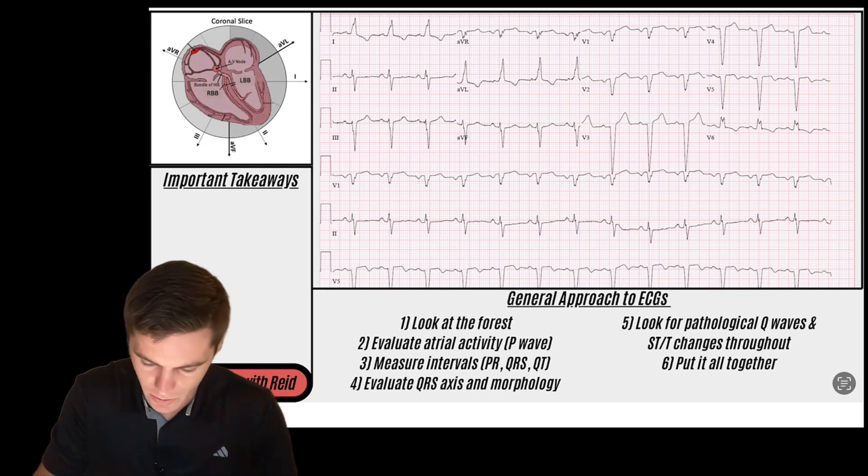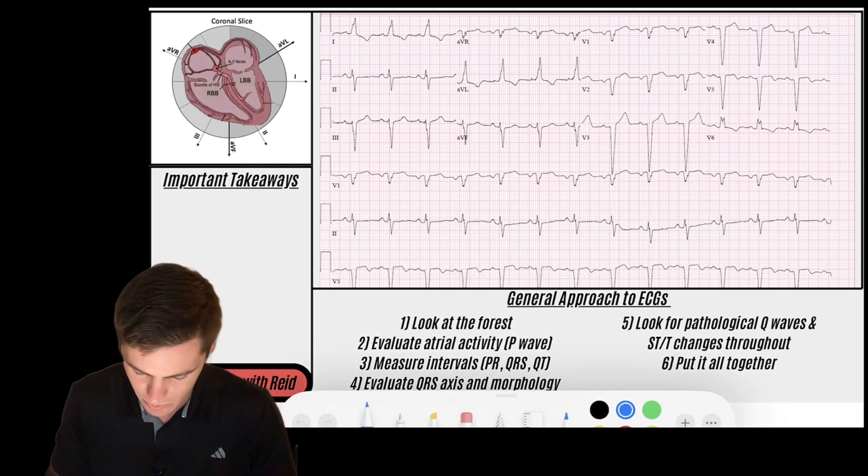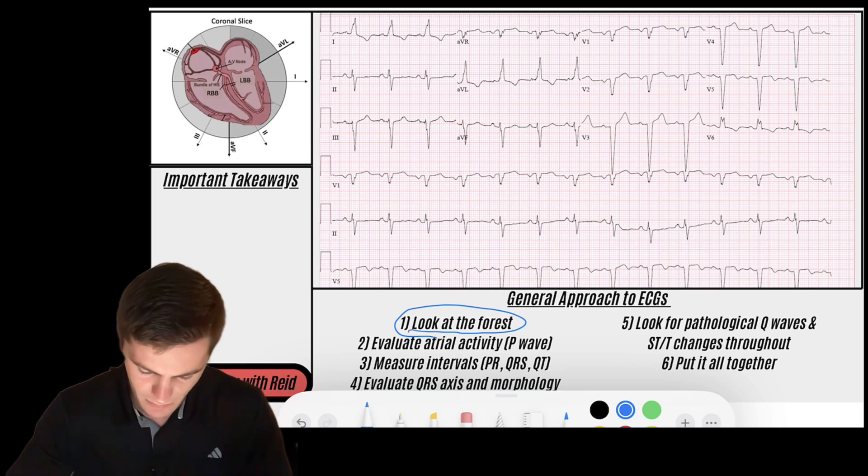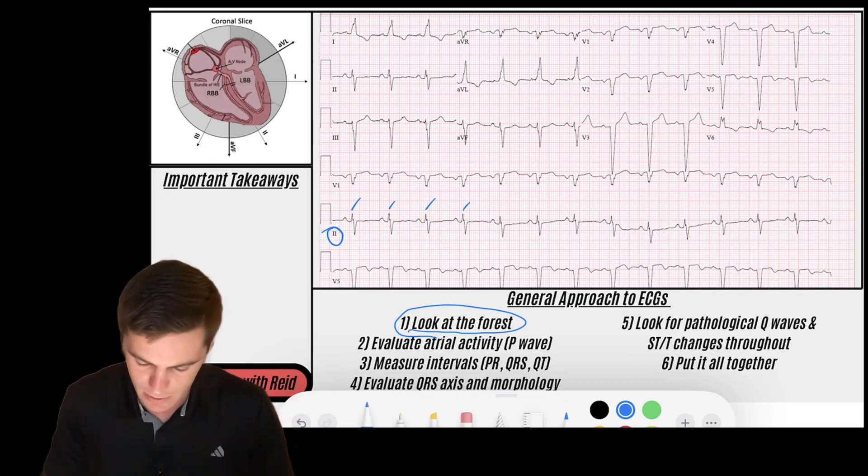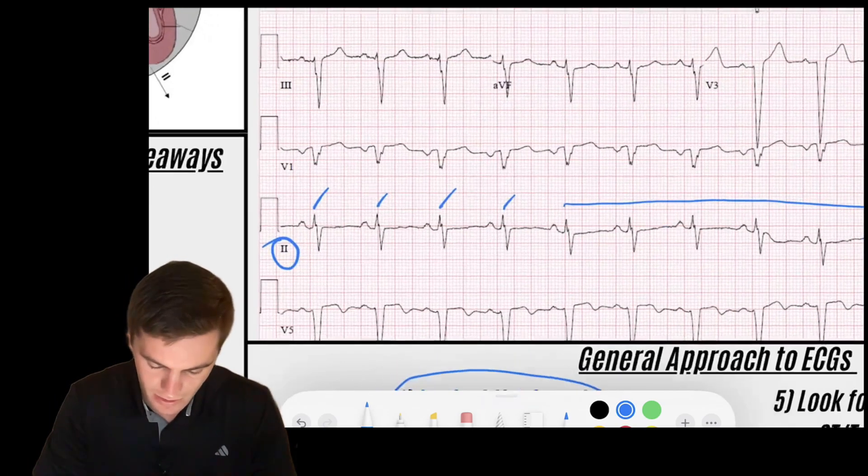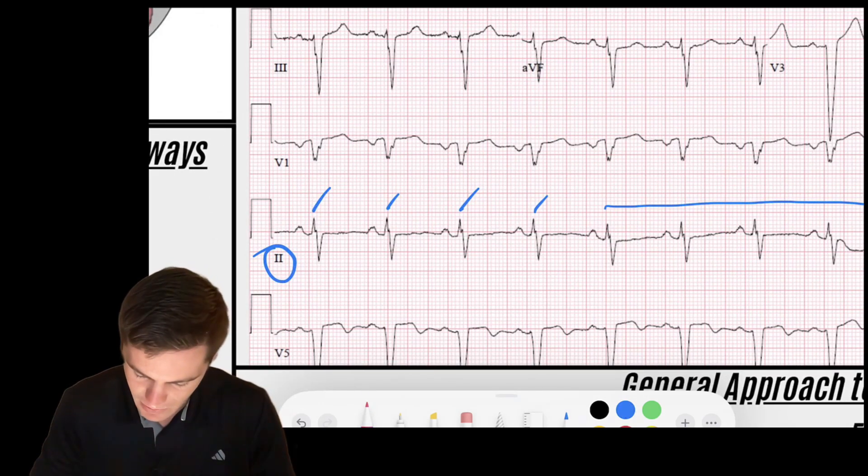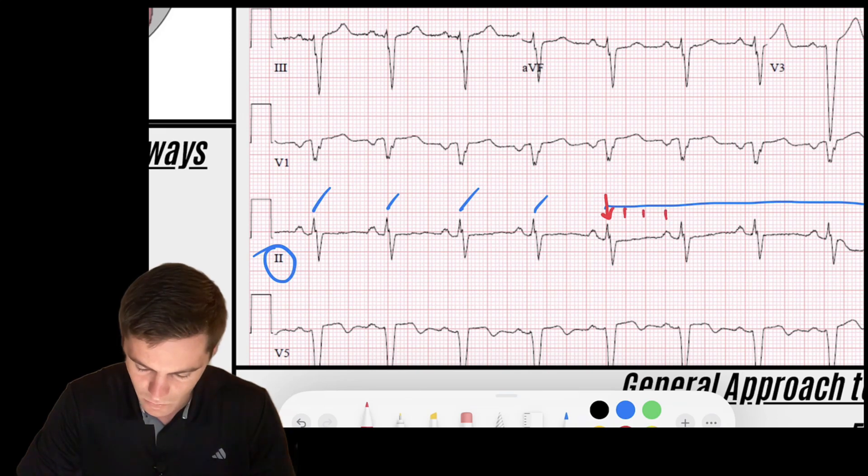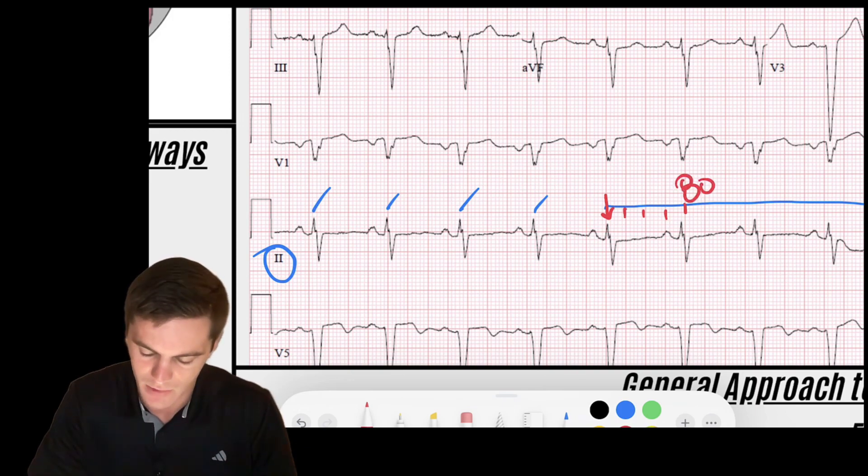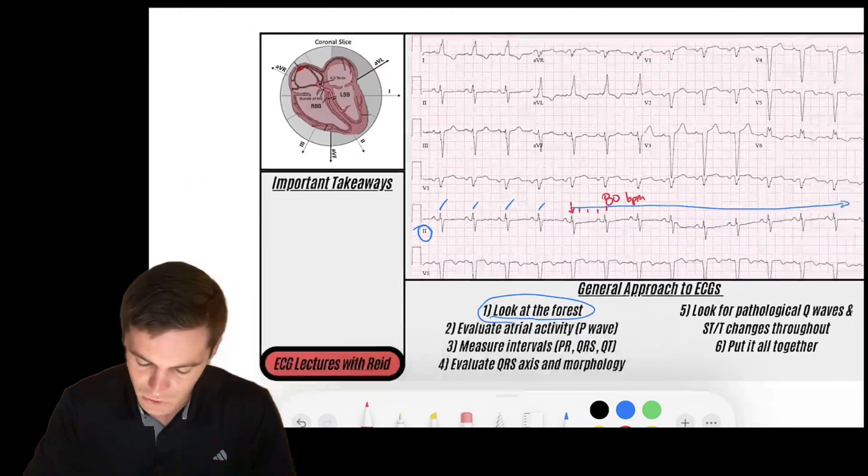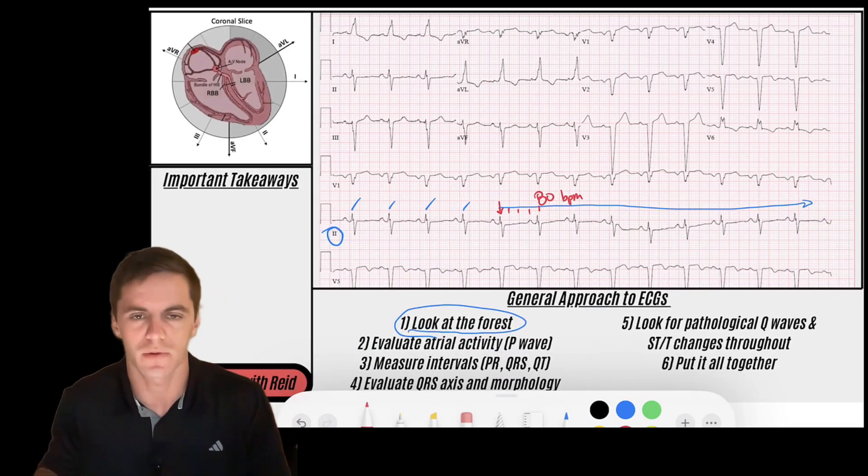The first thing we're going to do is look at the forest, which means we're just getting an idea of what's going on with this rhythm. I come down here to lead two and I see a regular rhythm. The rhythm stays regular the entire strip. When I zoom in and check the rate out, I find a QRS that lands on a solid line, maybe this one. I say 300, 150, 100, 75. So somewhere between 75 and 100 is the rate, but it's closer to 75, so I'll call this maybe 80 beats per minute. Rate seems to be normal.